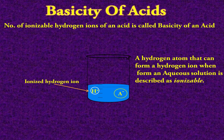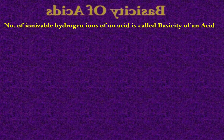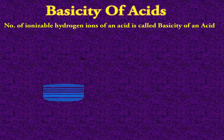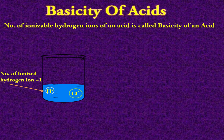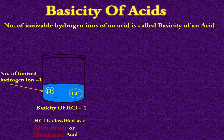Let's explain this through real examples. This is an example of a real acid: hydrochloric acid, HCl. When hydrochloric acid dissolves in water, it breaks down into its ions — H⁺ ion and Cl⁻ ion. Here, the number of ionized hydrogen ions is 1, meaning the basicity of HCl is 1.